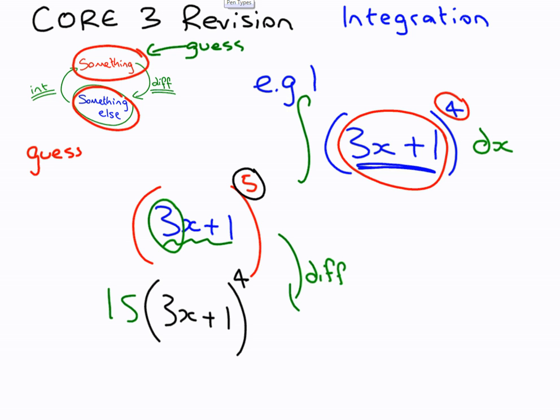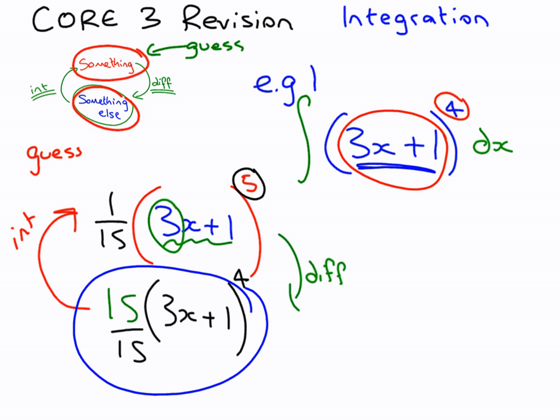So that means that we know how to integrate 15 times 3x plus 1 to the power of 4. But we don't have a 15 here. So what we have to do is we have to kind of cheat. We have to say, well, I'll tell you what, let's pretend that we started with 1 over 15, so that it's going to carry through and divide by 15 again. So we now know that the integral of this thing gives us that. And by the way, 15 over 15 cancels down to 1, which is why the method works.